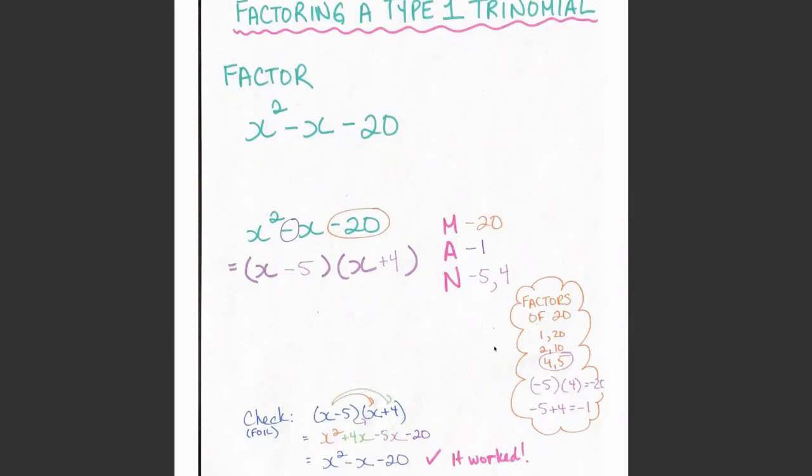My next step then is just to check to see if this worked because here is my expanded form, here is my factored form. They should be equivalent to each other. If I want to double check to make sure this worked, I'm going to grab a scrap piece of paper and actually foil this out to see if I get this back.